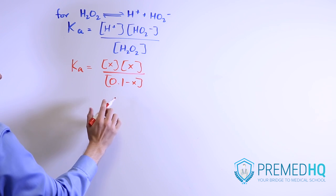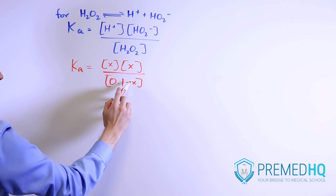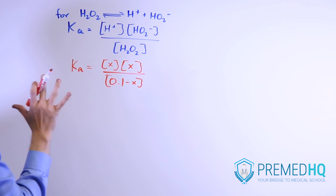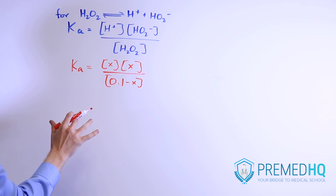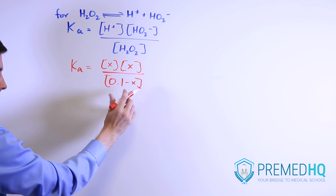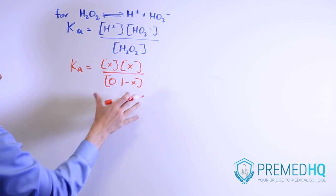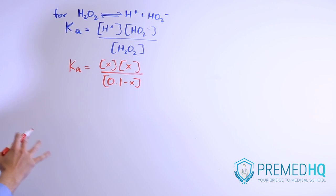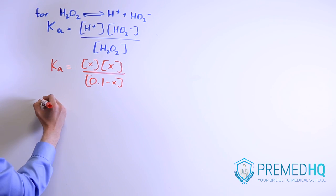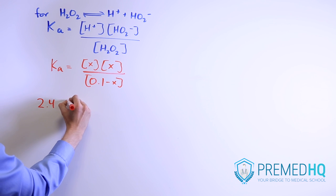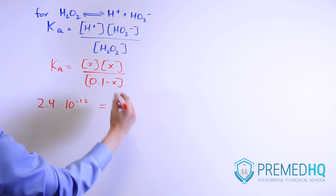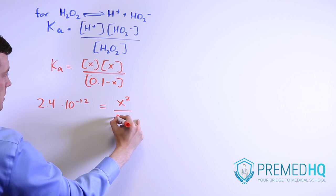We can simplify by eliminating X from the denominator, but only if X turns out to be less than 5% of the initial value. We'll solve with X removed from the denominator and then check afterward. Given Ka = 2.4 × 10⁻¹², we treat that as equal to X squared divided by 0.1.